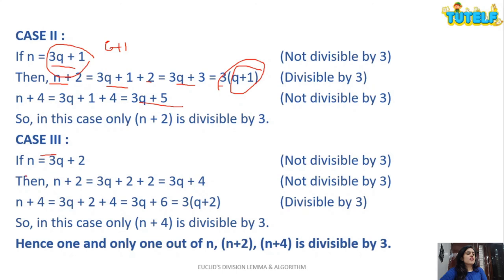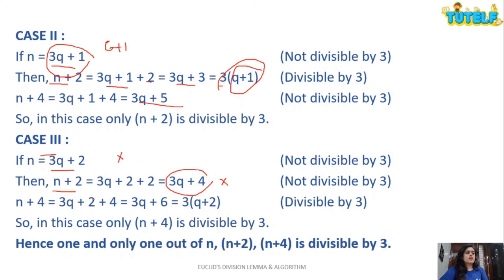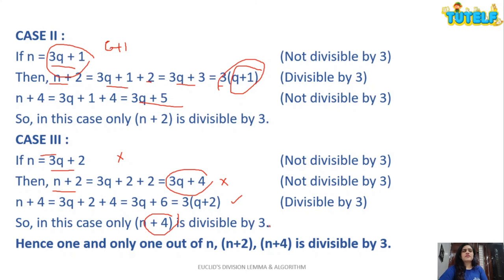Case 3: N = 3Q + 2. N is not divisible by 3. N+2 = 3Q + 2 + 2 = 3Q + 4 — not divisible by 3. N+4 = 3Q + 2 + 4 = 3Q + 6 = 3(Q + 2) — divisible by 3. So in case 3, only N+4 is divisible by 3. Hence, 1 and only 1 out of N, N+2, and N+4 is divisible by 3. This type of question comes for 4 marks.